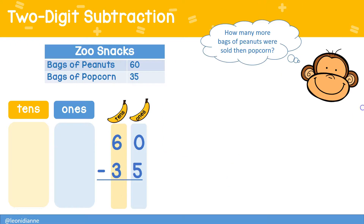Let's try another problem. Here we see the zoo snacks sold: 60 bags of peanuts and 35 bags of popcorn. How many more bags of peanuts were sold than popcorn? This is a comparison problem. We'll need to find the difference between the two numbers.